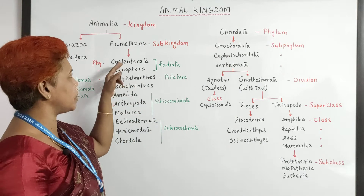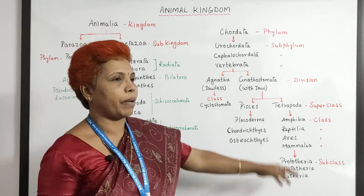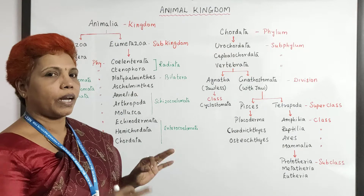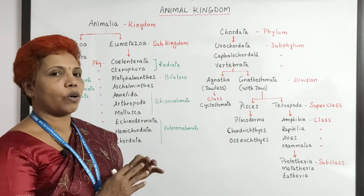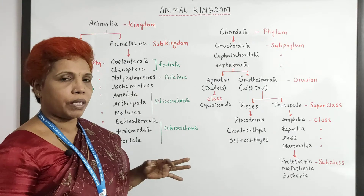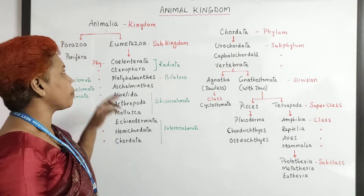It includes all the animals from Coelenterata to Mammalia, with tissue grade, organ grade, organ system grade — everything is there in Eumetazoa.